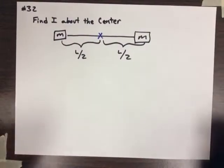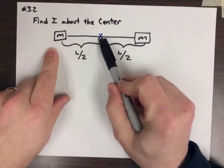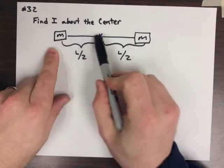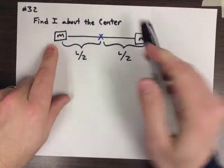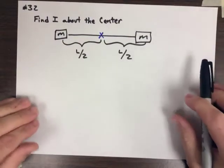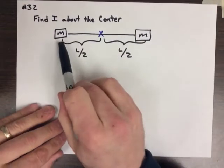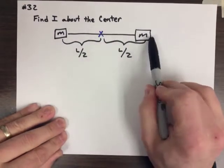Number 32 first asks us to find the moment of inertia about the center, and I have a negligible mass on the rod in between, and I have two point masses on the end. So really, this is a multiple point mass situation. When I have multiple point masses, I'm going to add up the moment of inertia of one of them, plus the other.